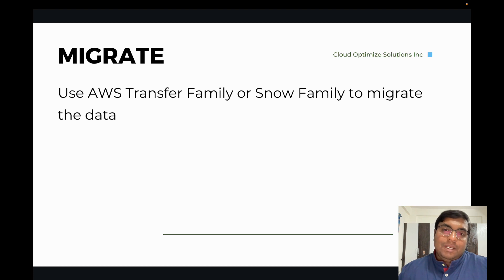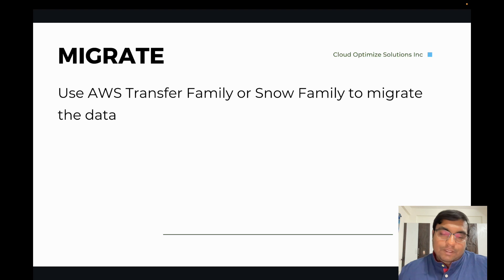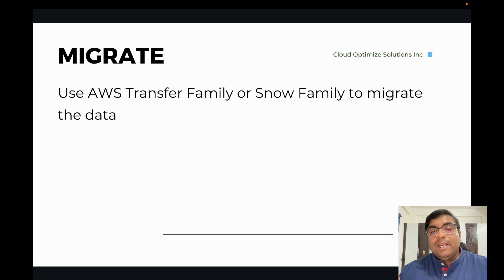Then we have the next step: Migrate. For SMBs, the best way to migrate is using AWS Transfer Family. Transfer Family allows you to use the traditional SFTP and FTP protocols to transfer data into AWS. It also gives you a highly available architecture so that your transfers won't fail.